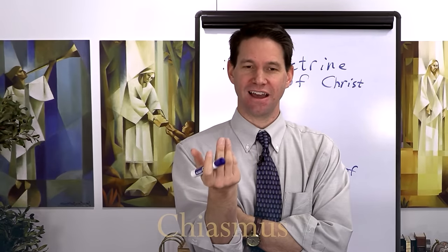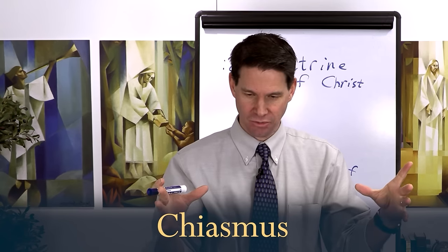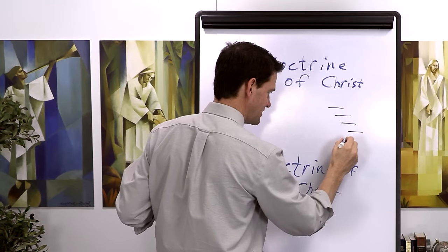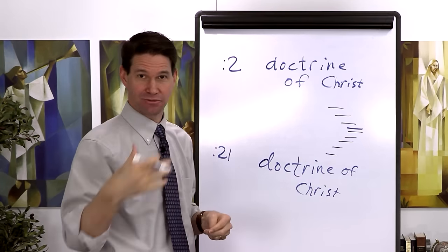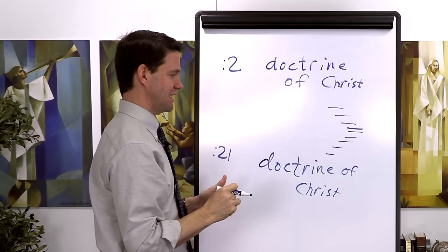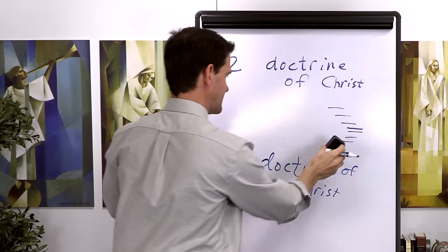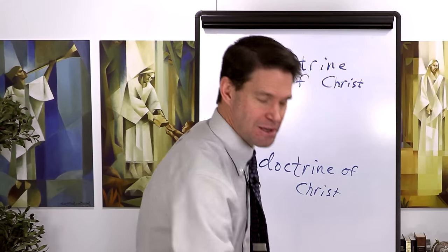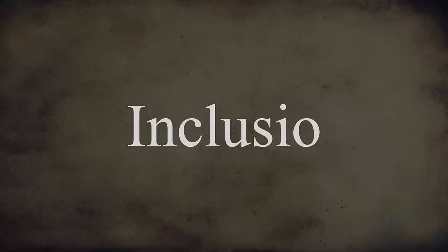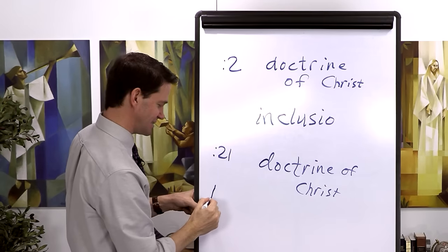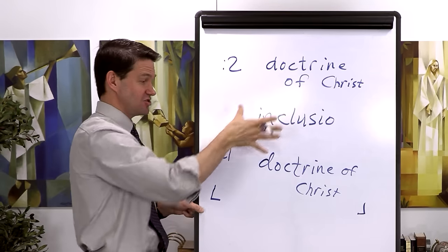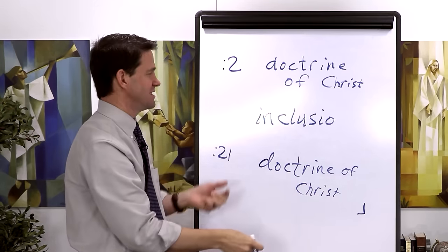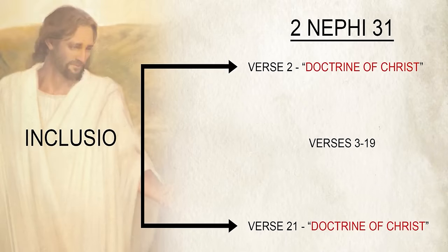A lot of people are familiar with the word chiasmus, because Jack Welch made that famous about 50 years ago in the Book of Mormon. It's that ancient literary structure shaped like an X—chi is the Greek letter for X, so it's chiasmus. Here is another ancient literary technique found all over the Bible and the ancient world, and also throughout the Book of Mormon. They call it inclusio, which shares its meaning with inclusion.